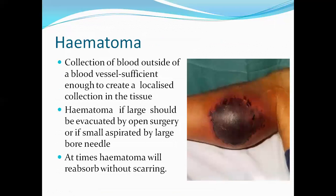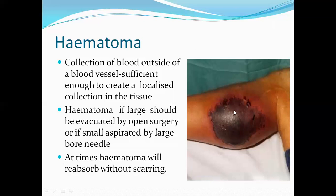Hematoma is a collection of blood outside of the blood vessel, causing a localized tumor-like appearance. If the hematoma is large, surgery is required to evacuate it; if smaller, it can be aspirated using a large-bore needle. Many times, if the hematoma is small, it automatically gets reabsorbed without scarring. Hematoma and ecchymosis are not very different — in hematoma there is a larger collection, giving a tumor-like appearance.